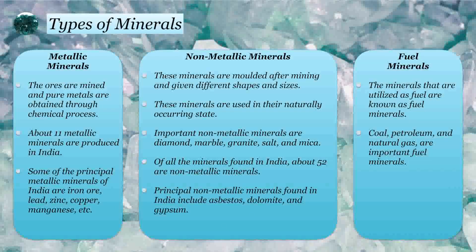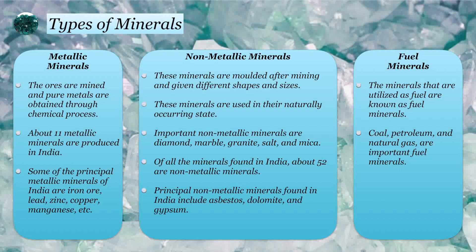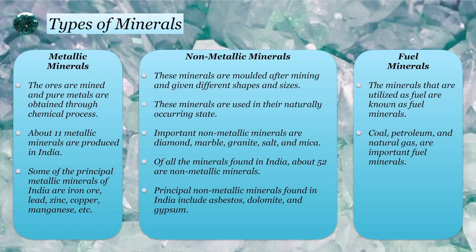Minerals are divided into three parts: metallic minerals, non-metallic minerals, and fuel minerals. Metallic minerals are generally available in the form of compounds like oxides, chlorides, and sulfates, so the ores need to be purified before getting the pure metals. About 11 metallic minerals are produced in India, including iron ore, lead, zinc, copper, and manganese.